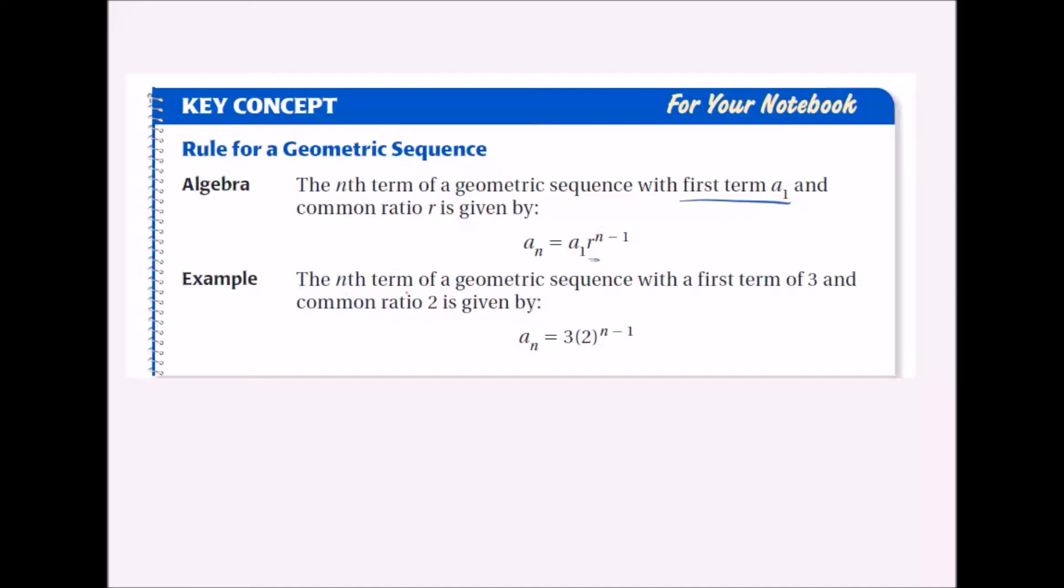So for example, the nth term of a geometric sequence with the first term of 3 and the common ratio of 2 looks like this. You would plug in some number for n and get some value for a_n. Like, let's say you want to know what the fifth term was, you'd plug in 5, and then you'd see what the fifth term would be for a_n.